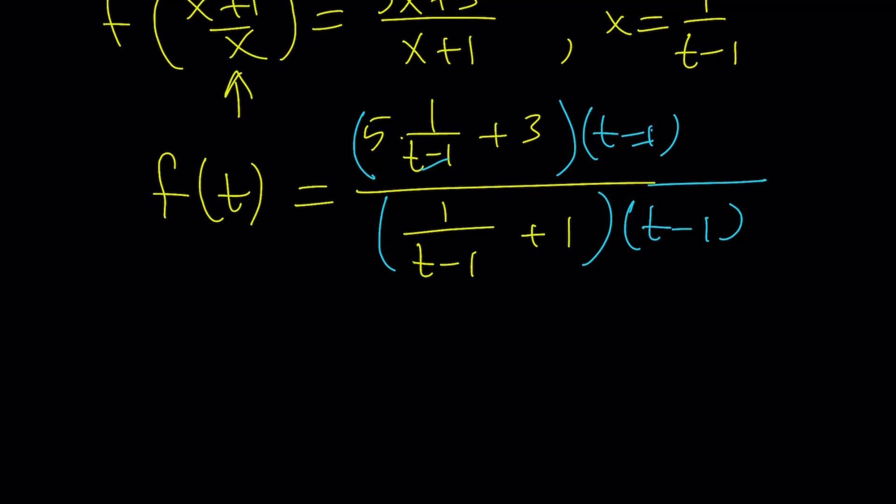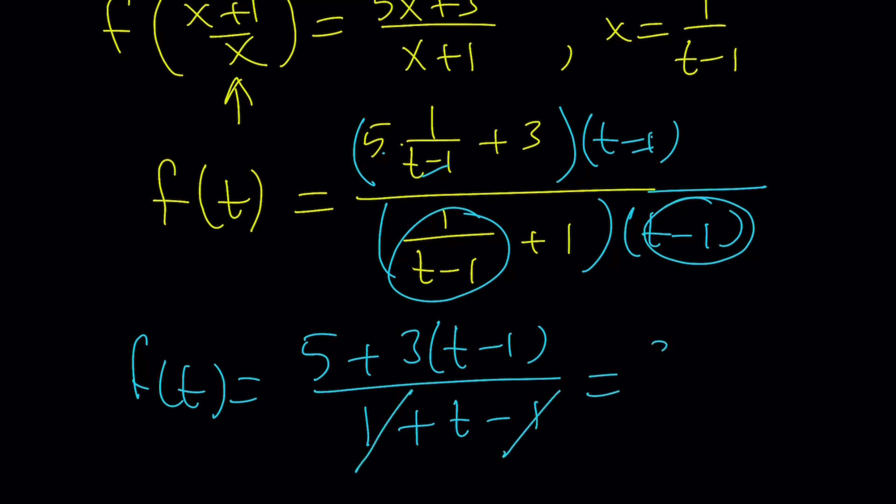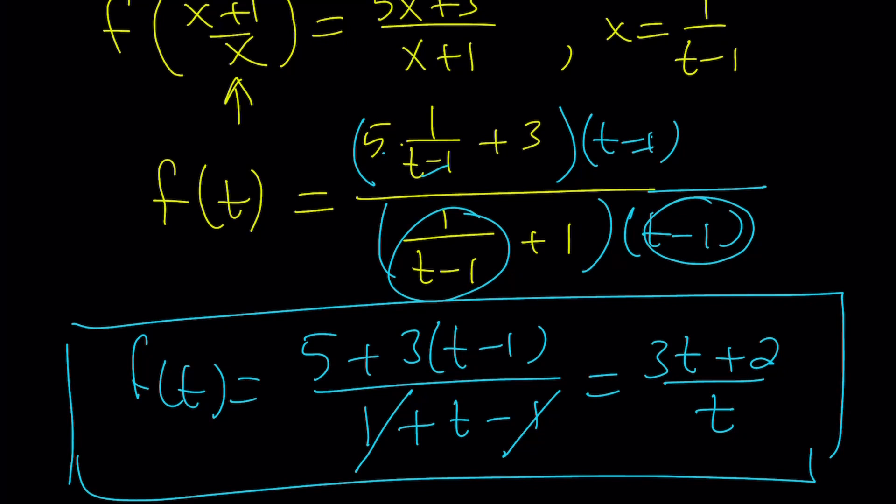So you're going to get the following from here. f is going to be 5 + 3(t-1) divided by—when you multiply these two things—it's going to give you 1 + t - 1. And obviously, 1 is going to cancel out here. This is going to give us 3t - 3 + 5, that's plus 2, divided by t. Okay? So that's going to be my expression for f(t).